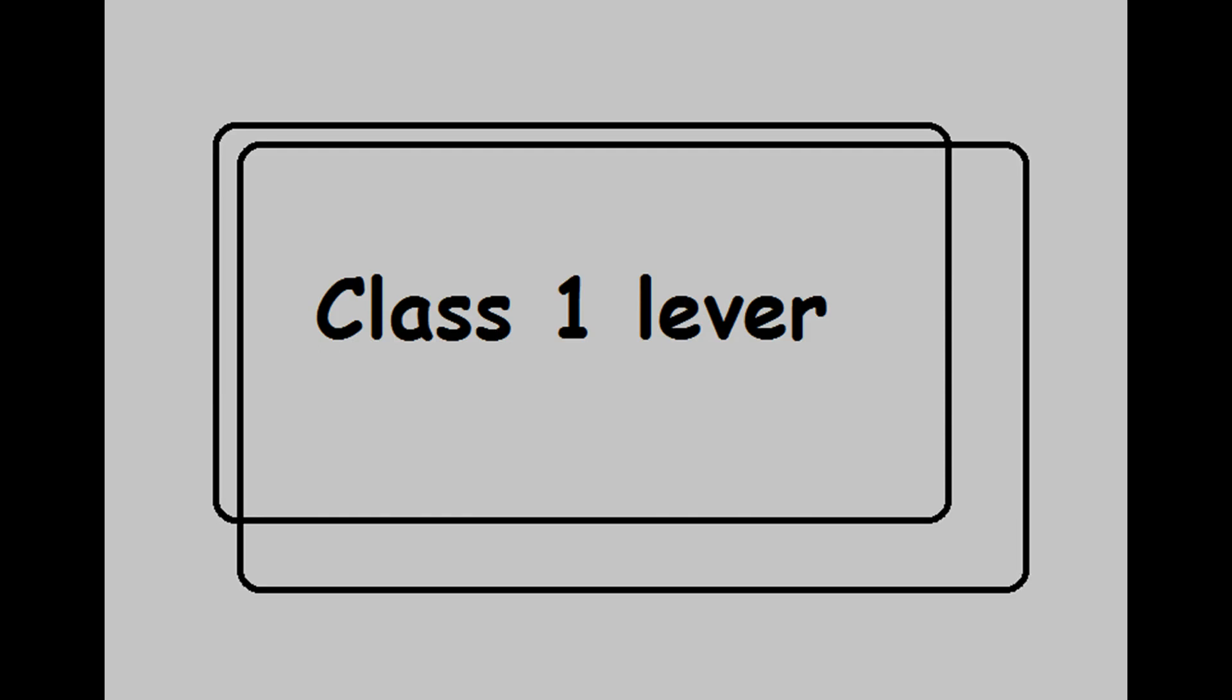The lever we're going to talk about is called a Class 1 lever. It's very simple to make. Take any straight object, such as a board or metal rod, and lay it on top of something that's pointed. You now have a lever.